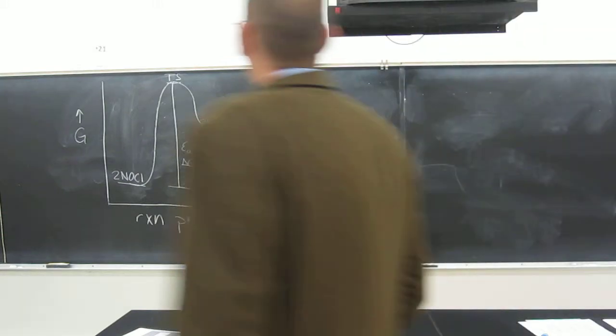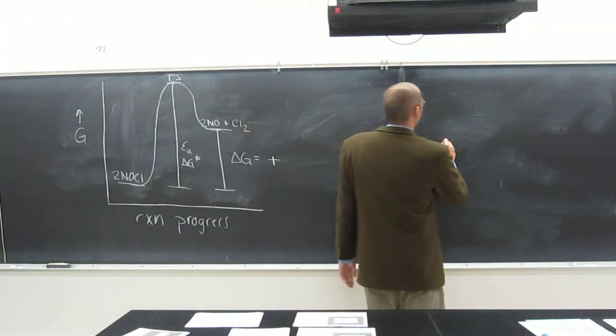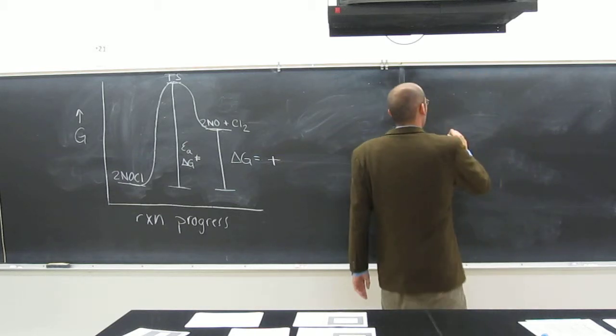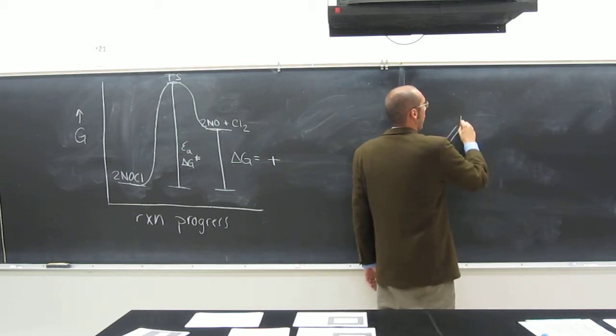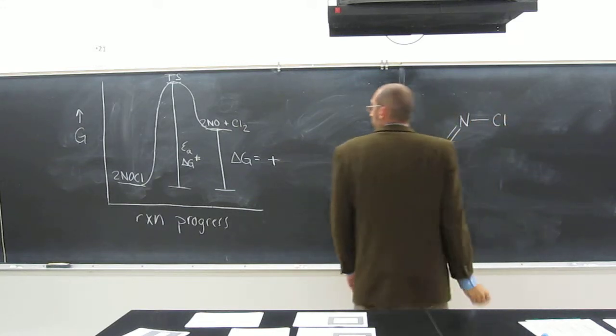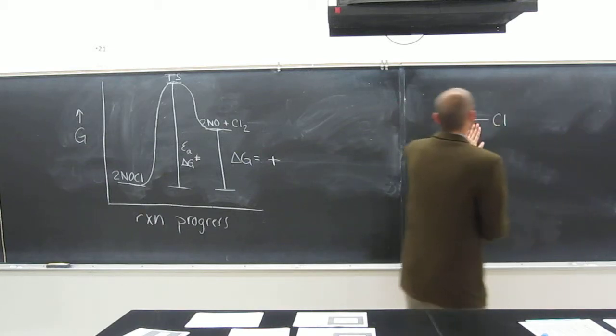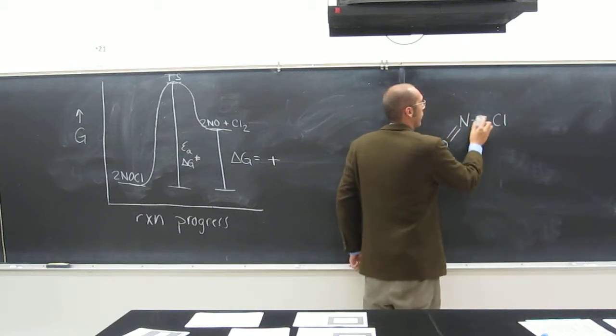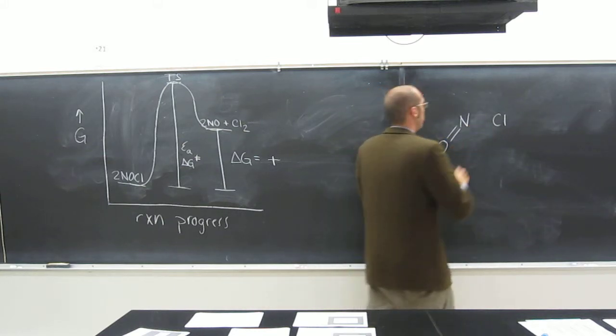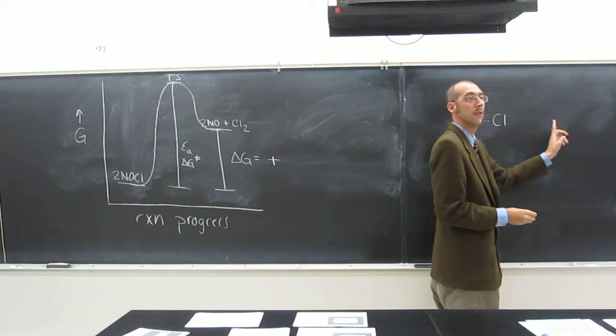So let's draw kind of the picture that they have drawn here. It's hard for me to see. So what is that? O double bonded to an N, right? And then the Cl. And in fact, this bond should be dashed, right? Because we're making NO, right?